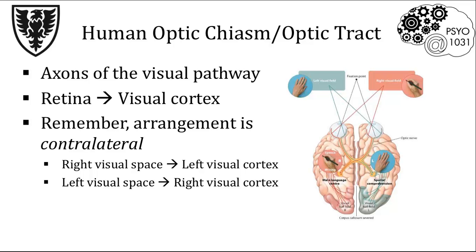As you should recall from earlier in this course, the visual system has a contralateral arrangement, so that the right side of visual space is sent to the left visual cortex and vice versa. Taking the right side of visual space as an example, some of this information is sent to the outside part of the left eye and the inside portion of the right. The information is sent along the optic nerve to the brain, but the left retina pathway stays on the left-hand side of the brain, while the right retina pathway crosses over so that the information about right visual space gets shuffled over to the left hemisphere.